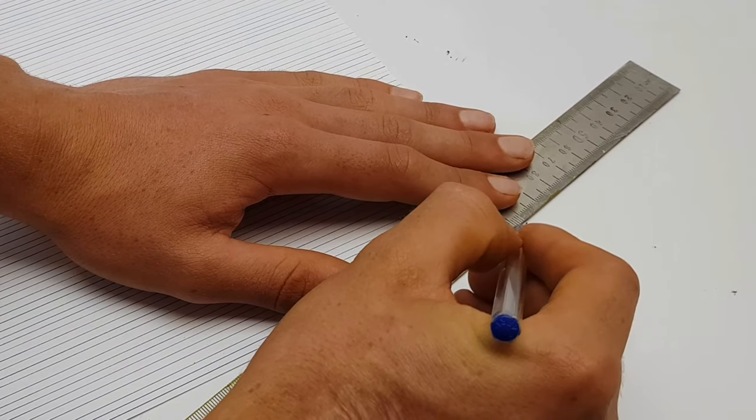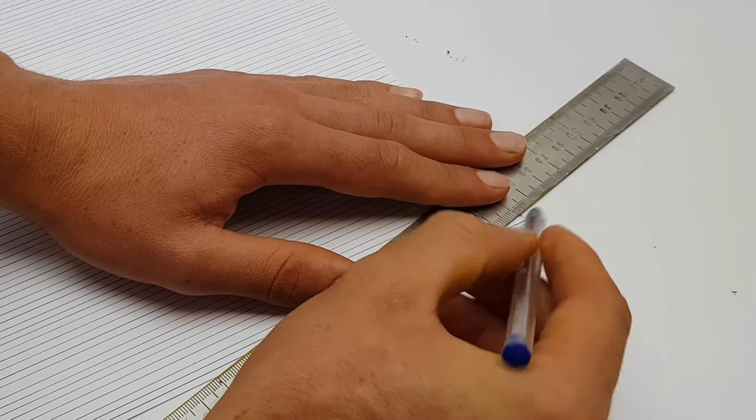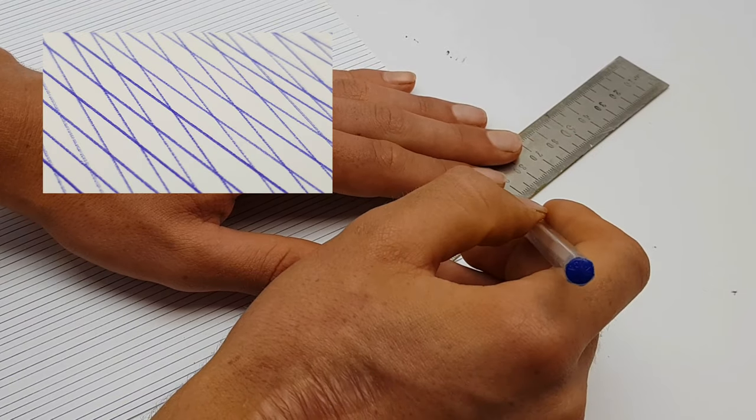Now you need to draw more lines over the other lines to get a lot of small diamond shapes that looks like this.